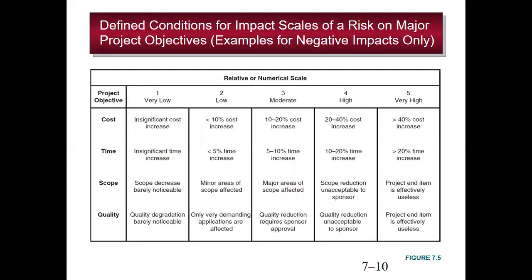Another technique defines conditions for impact scales of a risk on major project objectives. As shown in figure 7.5, the project objectives are cost, time, scope, and quality. For assessment, a scale is created — in this case a 5-point scale. A 7-point scale or other scales can also be used; the scale depends on the particular project, its objectives, and the risks that can be foreseen.